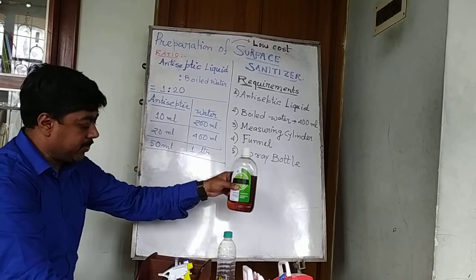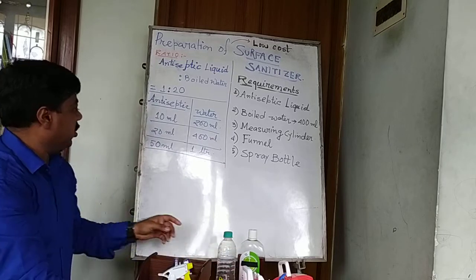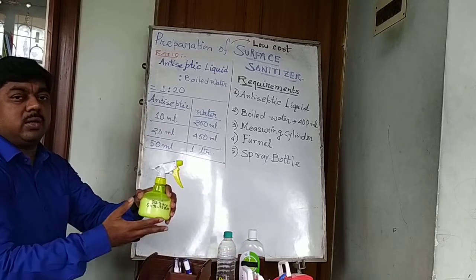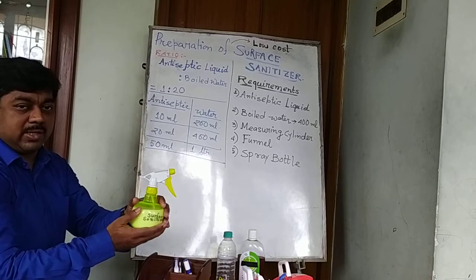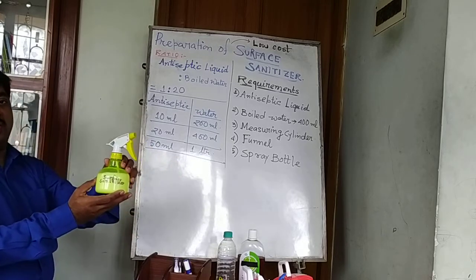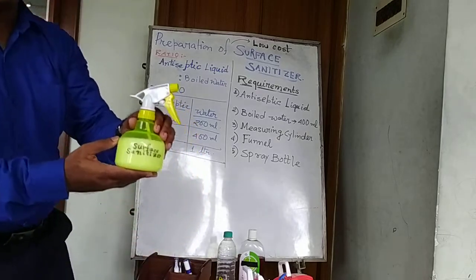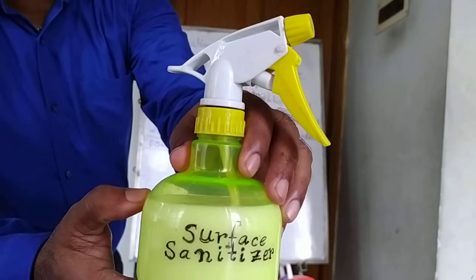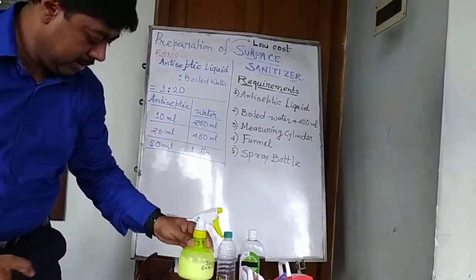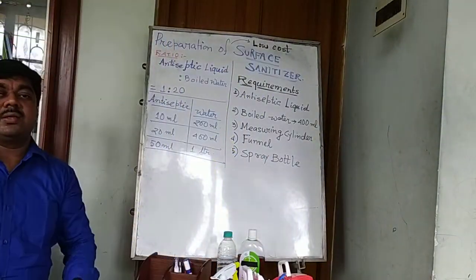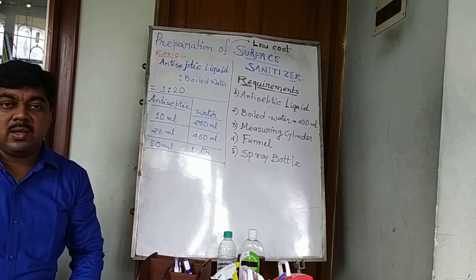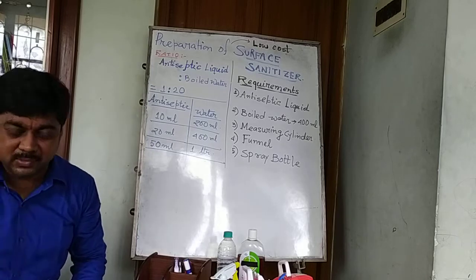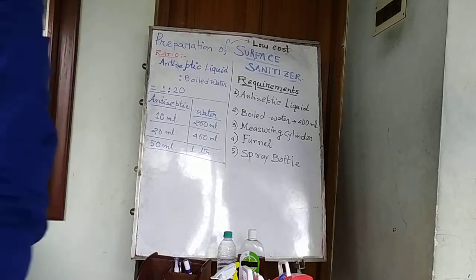Only 20 ml is required to make 400 ml of surface sanitizer. Let's go for it — try it at home and make the surfaces of your homes sanitized. Take care, children. Goodbye, and have a very nice, healthy, and happy life. Thank you!